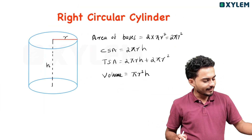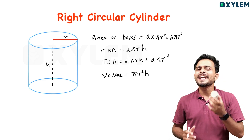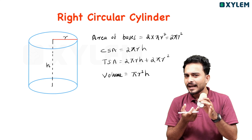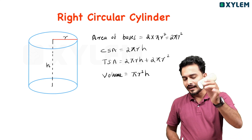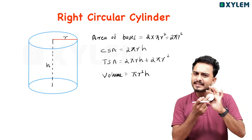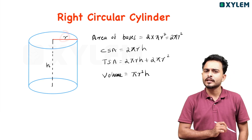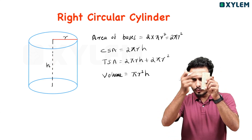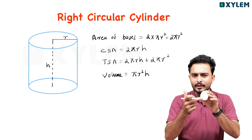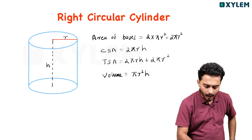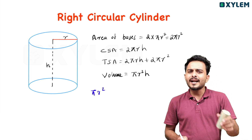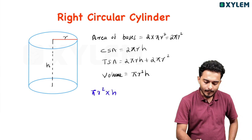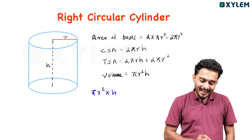Right circular cylinder. The radius is small letter R, and the height is small letter H. The base area is πR squared. Volume = πR squared into H, that is πR²h.